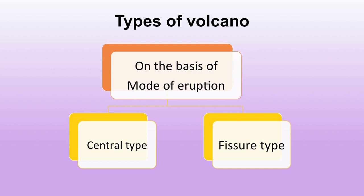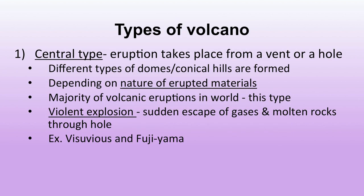On the basis of mode of occurrence, there are two types: central type and fissure type. Central type eruption takes place from a vent or hole, forming different types of domes, conical hills etc. depending on the nature of erupted material. The majority of volcanic eruptions in the world are of this central type, and violent explosions occur when there is sudden escape of gases and molten rocks. Examples include Vesuvius and Fujiyama.